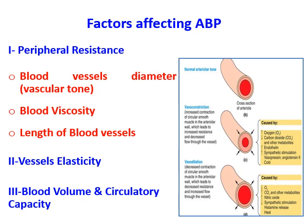To summarize the factors affecting arterial blood pressure through total peripheral resistance: the diameter of the arterioles — vasoconstriction decreases diameter but increases total peripheral resistance and arterial blood pressure; vasodilation increases diameter, decreases total peripheral resistance, and decreases arterial blood pressure. Blood viscosity: increasing viscosity in polycythemia increases total peripheral resistance; decreasing viscosity in anemia decreases total peripheral resistance.